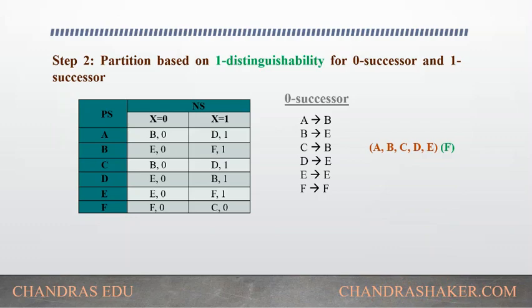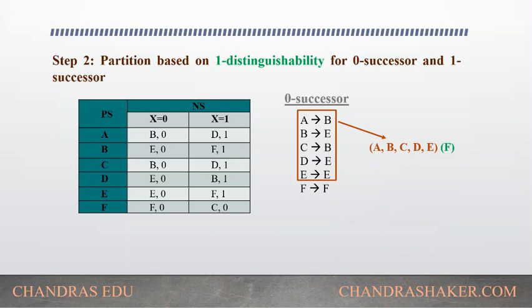We will check whether the next states belong to the same partition or a different one. If they belong to the same partition they will remain as is, but if they belong to a different partition, the partition needs to be divided again. Looking at the next states of a, b, c, d, e — we get b and e, which belong to the same partition as earlier. Since f is already its own partition, there is no need to check its next state. So the partitions remain the same for the 0-successor.